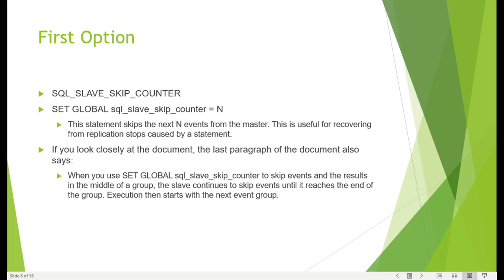Looking more closely at the document - it says when you use SET GLOBAL SQL_SLAVE_SKIP_COUNTER to skip events and the result lands in the middle of a group, the slave continues to skip events until it reaches the end of the group, and execution then starts with the next event group. This is very critical - it means N does not simply mean N transactions are skipped, and it may even be a scenario where greater than N transactions are skipped.